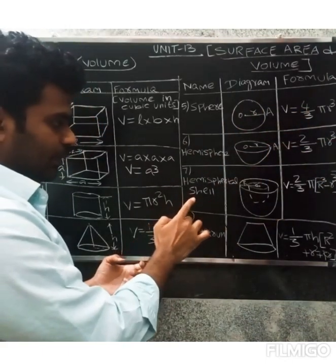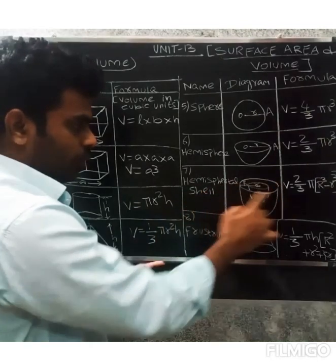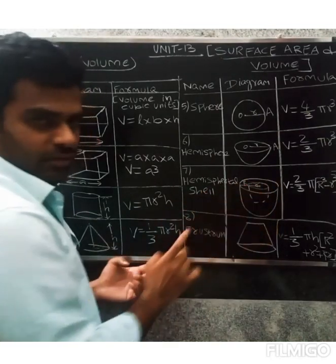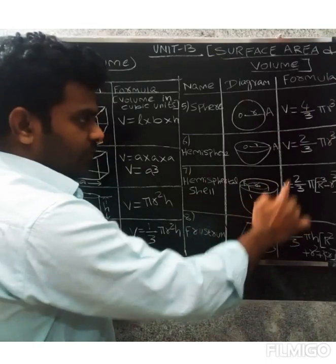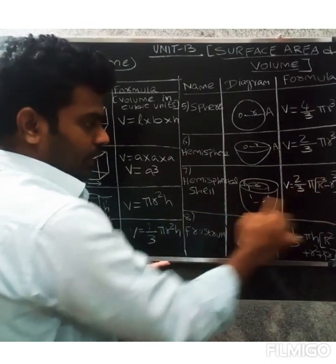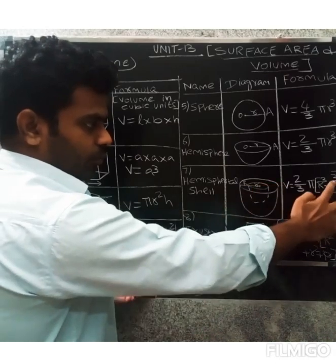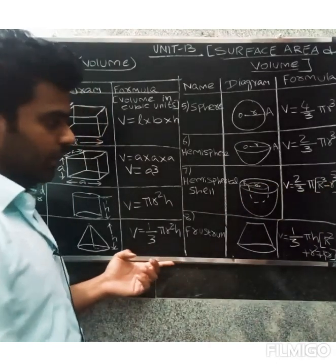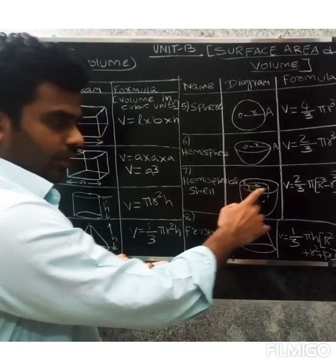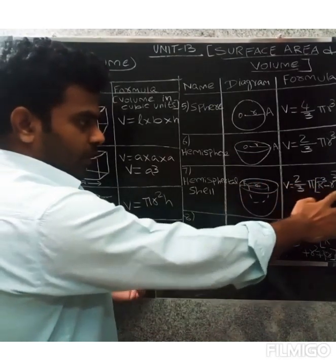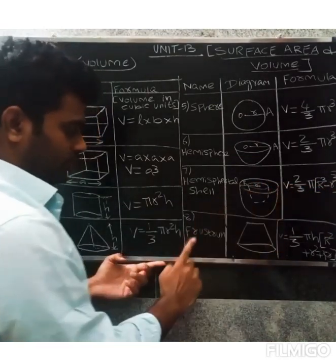Next is hemispherical shell. The hemispherical shell has an outer part and inner part. The formula is V = 2/3 π(R³ - r³). The outer part is capital R³ minus the inner part small r³. The difference between the radii - outer R³ minus inner r³.